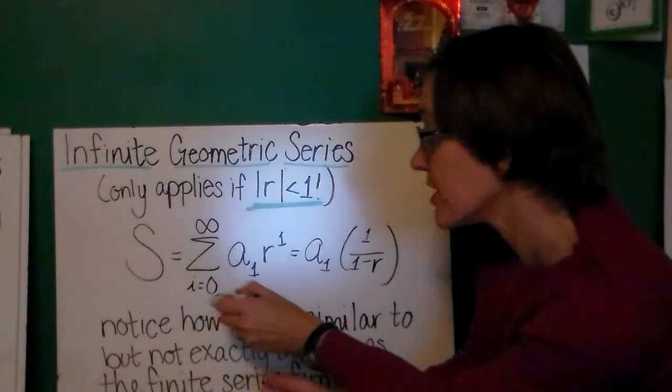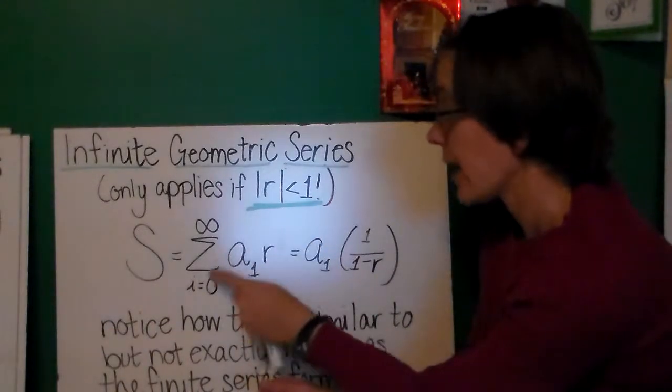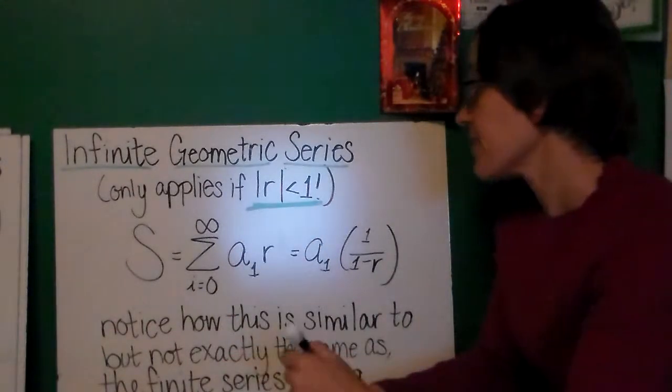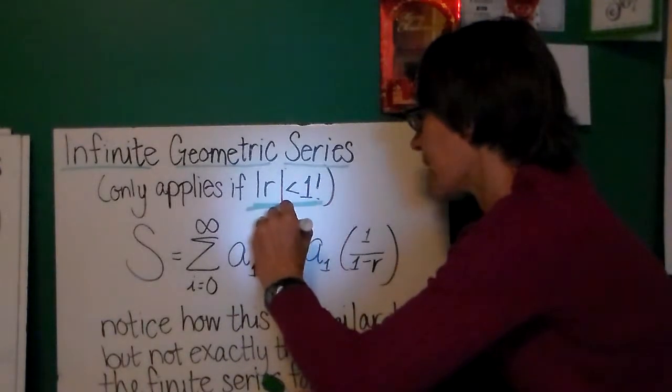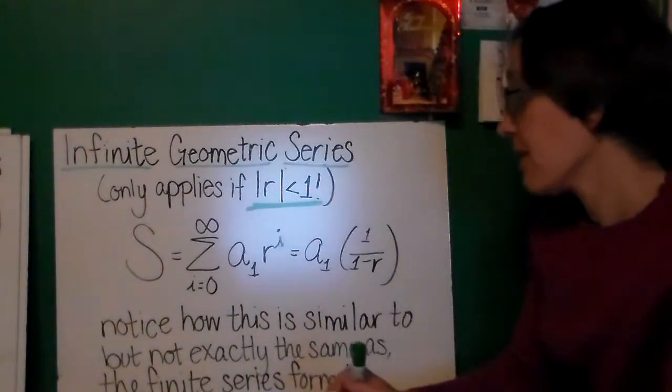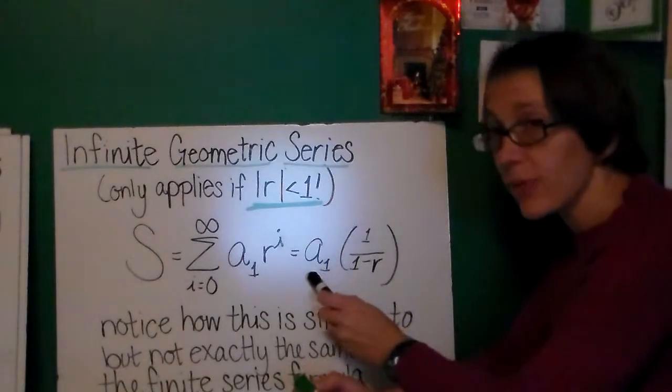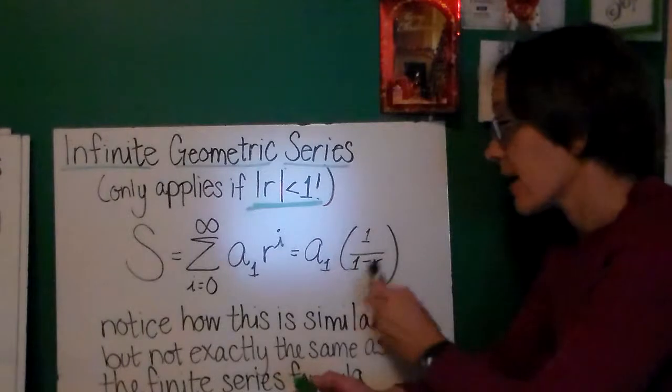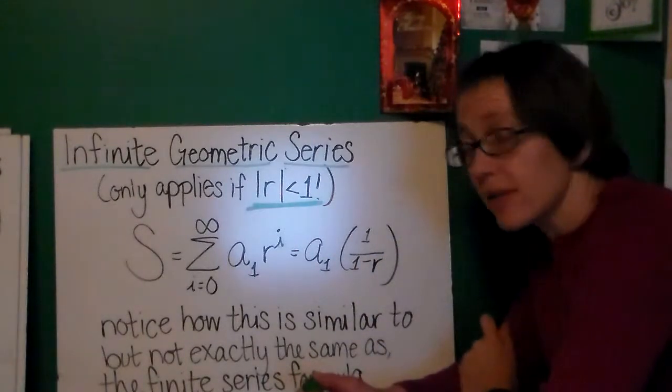So this infinite geometric series formula only applies when the absolute value of r is less than 1. Notice it is a little bit different. It has i goes from 0 to infinity, and it's a_1 times r to the i power. However, we have some similarities. I still have, in my formula, a_1 times a fraction. That fraction is 1 minus r in the denominator.